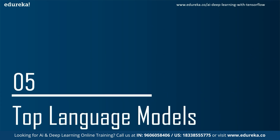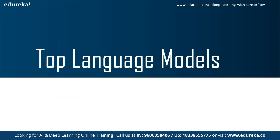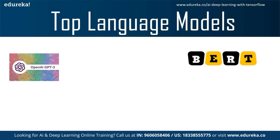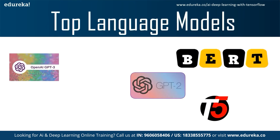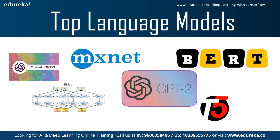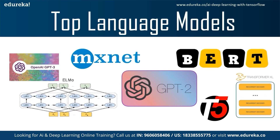Now let's look at some of the popular language models available. OpenAI's GPT-3 — the successor to GPT and GPT-2 — is one of the most notable pretrained models by OpenAI. This large-scale Transformer-based language model has been trained on 175 billion parameters, which is 10 times more than any previous non-sparse language model. It has been trained to achieve strong performance on many NLP datasets, including tasks like translation, question answering, and several other tasks.